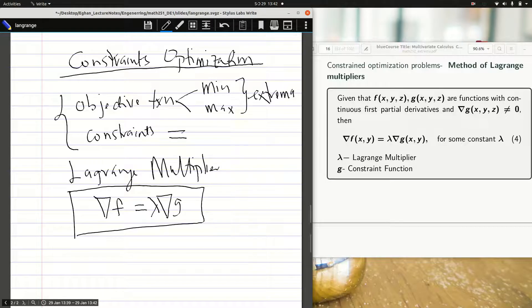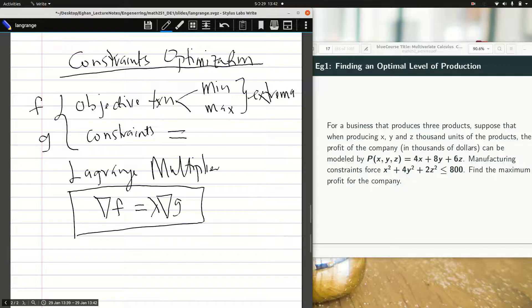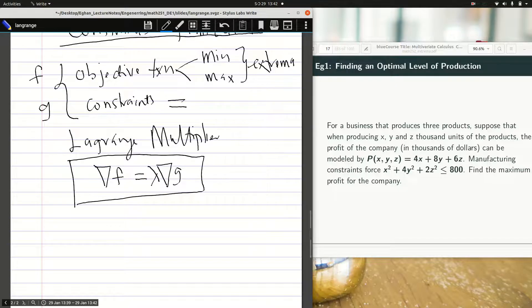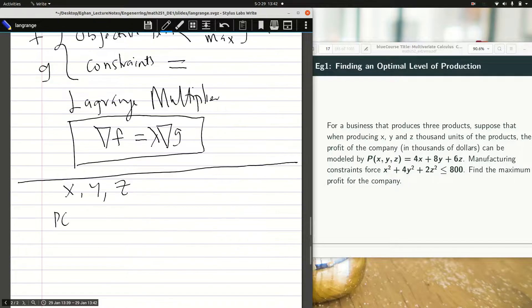The objective function here is the F, the constraint is the G. Let's take an example. This example has to do with some firm trying to produce products, want to find the optimal level of production. The products are three: product one is X, product two is Y, product three is Z. And then we are given the production model as P of XYZ, which is 4X plus 8Y plus 6Z. We are also given some constraints, manufacturing constraint for this question.